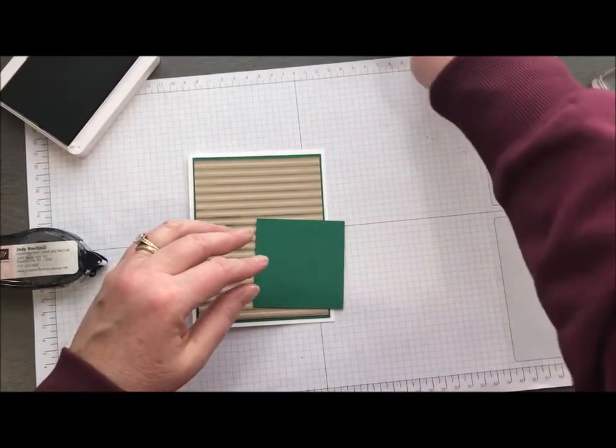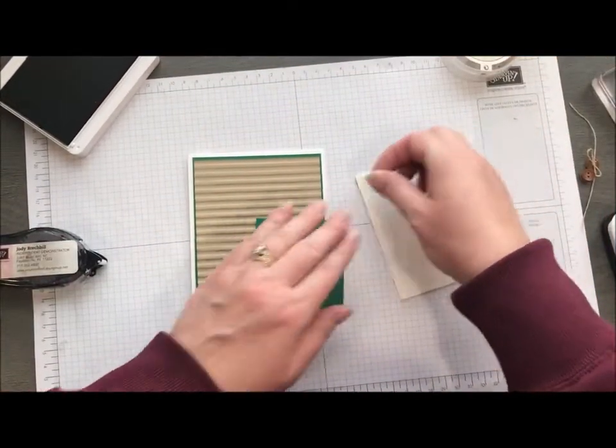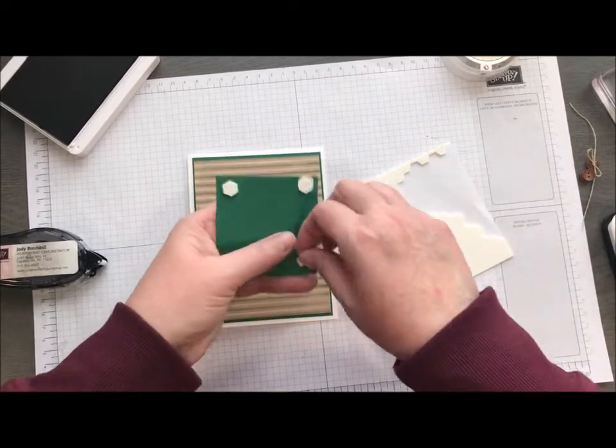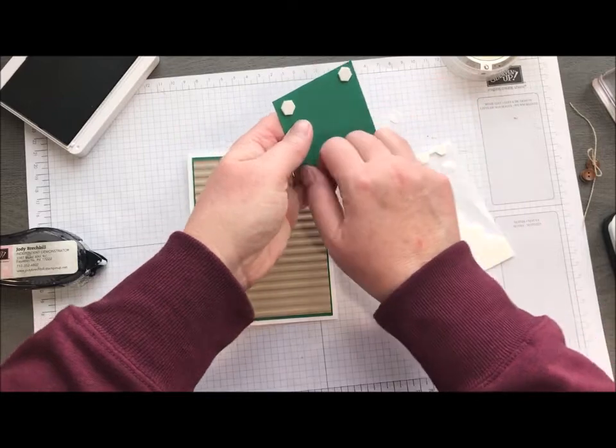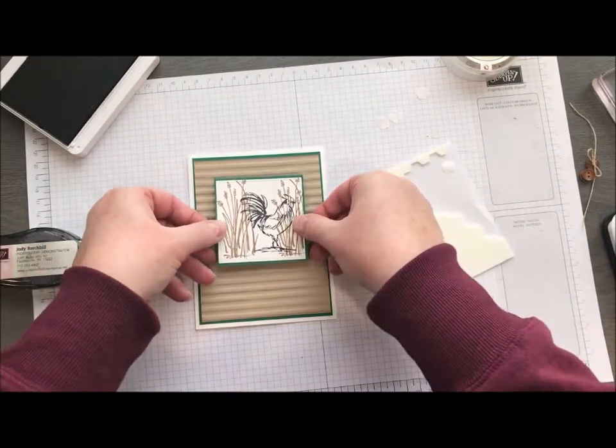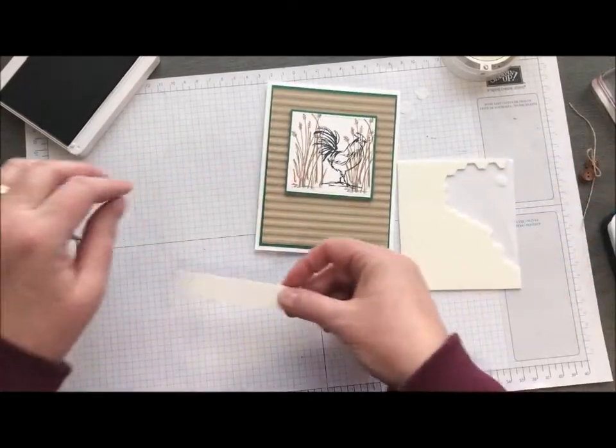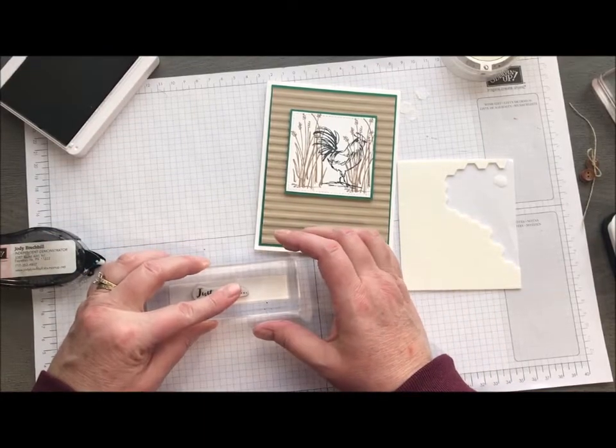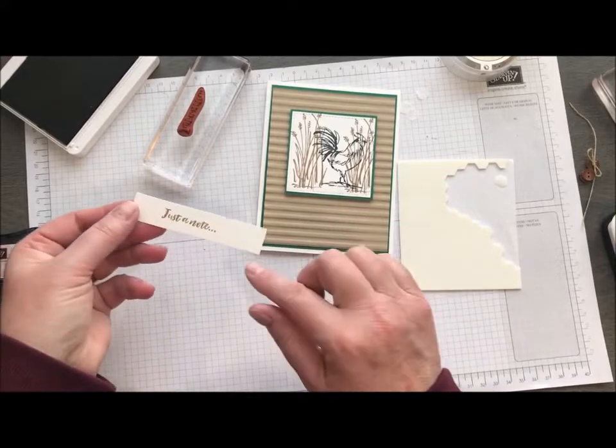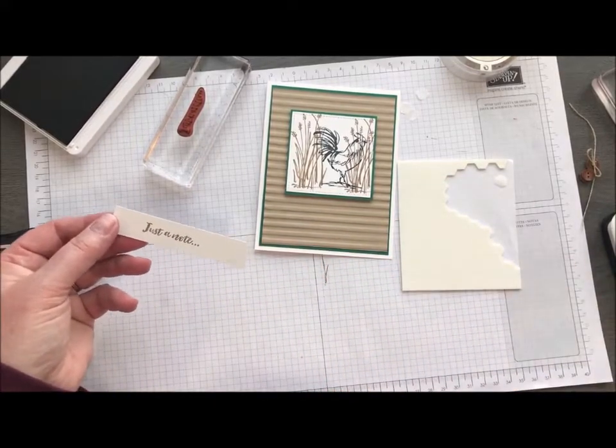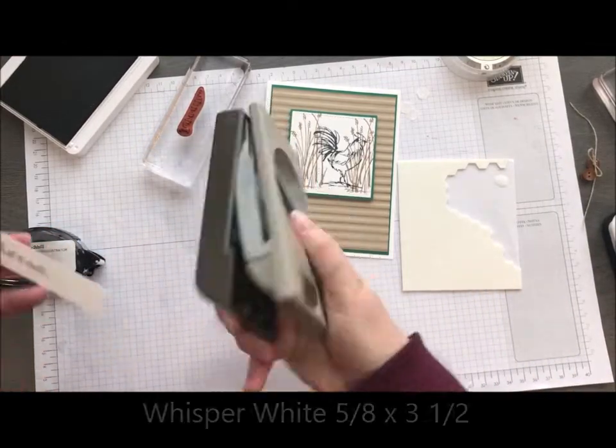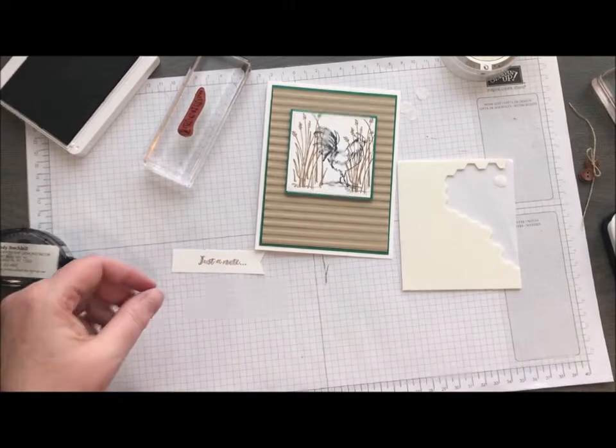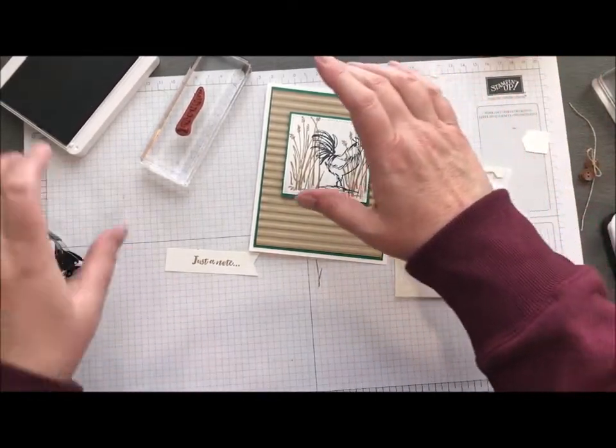There we go. And then I'm just going to take a couple dimensionals and attach this square. Put him on the front here. Then I have a little strip and I'm going to use the Just a Note stamp in Crumb Cake. This is from the same stamp set and I want to do a little banner notch. Now you could totally do that with scissors, but I always like to pull in the Truly Tailored Punch and just slide that in the top. And it will give me the perfect little notch.